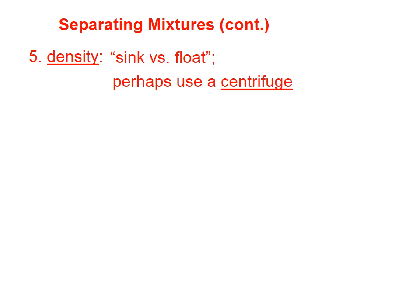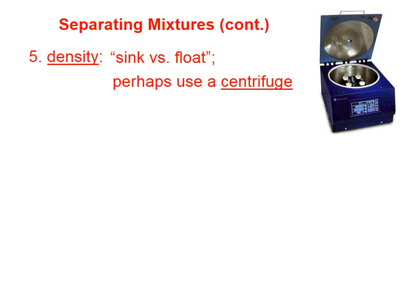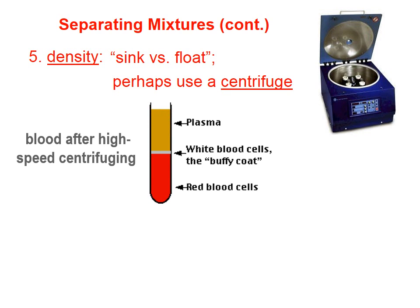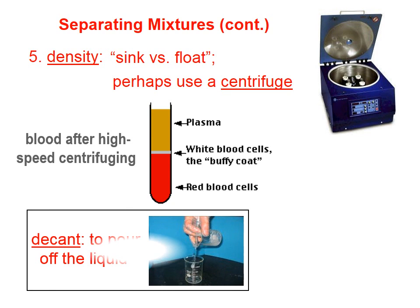We could also separate mixtures because components have different densities. Maybe we'll use a centrifuge. If you've ever given blood, they can separate the blood plasma from the red blood cells via a centrifuge. Blood turns out to be a mixture.